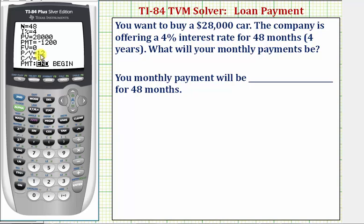Next, we have payments per year. Because you're paying monthly, this would be 12. And the compounds per year is also 12, because we're assuming the interest is compounded monthly.